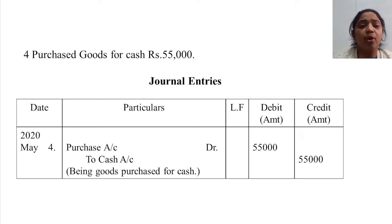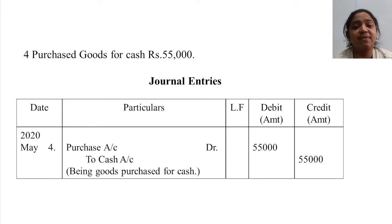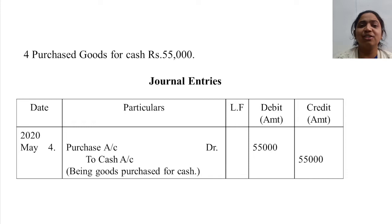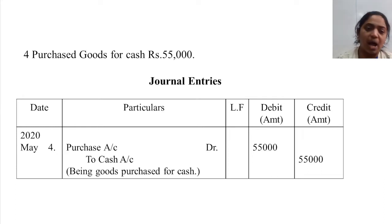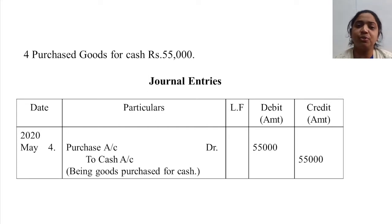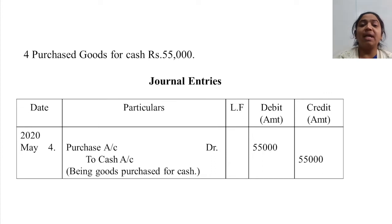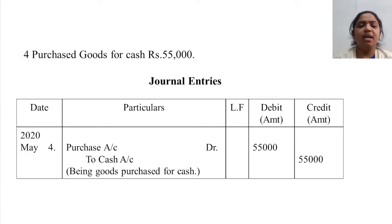Next, date 4: purchase goods for cash Rs.55,000. Purchase is an expense and cash goes out. Whenever purchase is there, purchase account is always debited and cash goes out. Entry: Purchase Account Debit Rs.55,000, To Cash Account Rs.55,000. Narration is very important — it gives the explanation of the journal entry and should always be written below it. Narration: being goods purchased for cash.